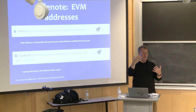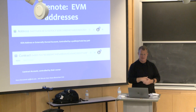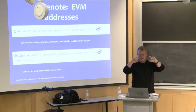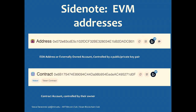An EOA is a simple wallet that holds assets — it's an end-user account, it's not doing anything else. The same 0x number of digits can also be a contract. You wouldn't know if one is a wallet or a contract until you went to Etherscan, typed it in, and saw that it's actually a contract. And to make things even more confusing, there are some wallets that are smart contracts — smart contract-based wallets.